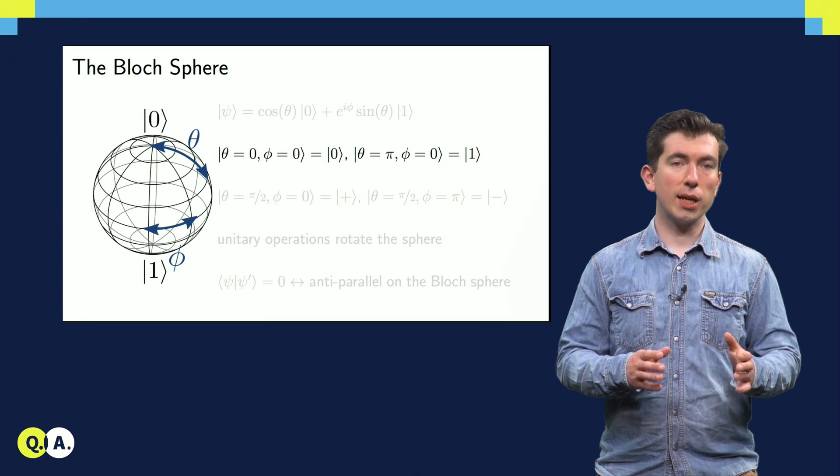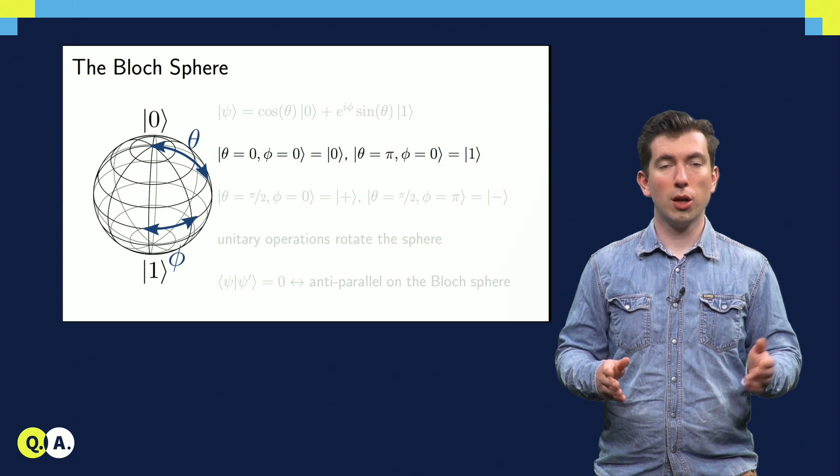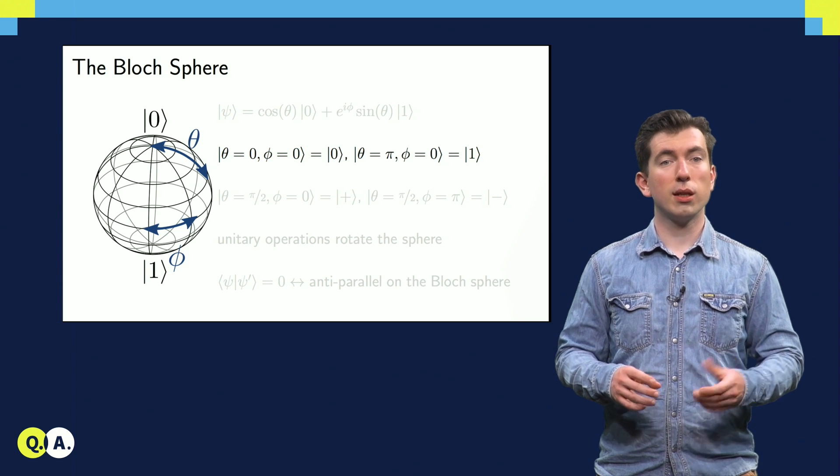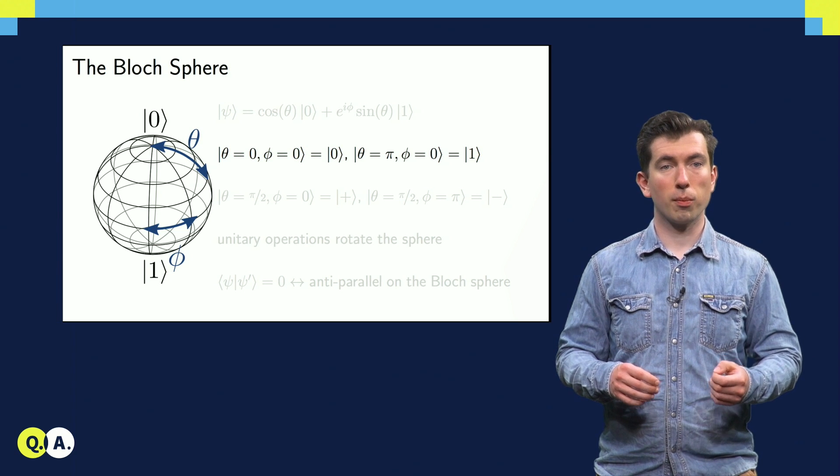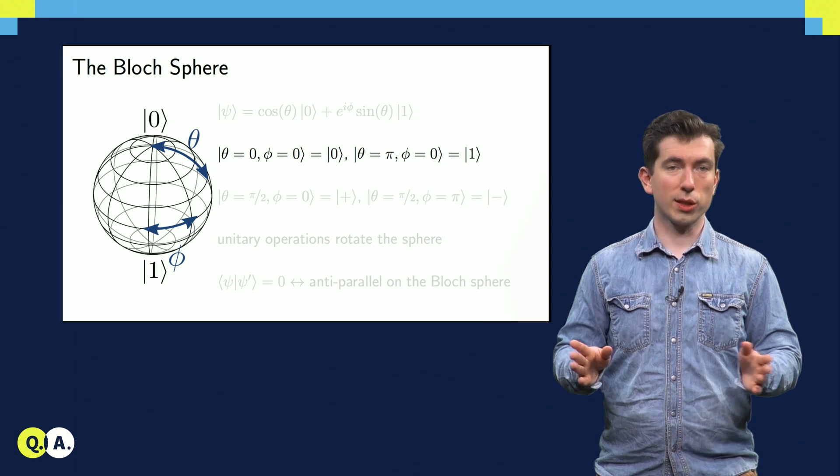We can see that, setting theta to 0 and phi to whatever we want, we get cos theta equals 1 and sin theta equals 0, so the corresponding state is simply the 0 basis state. If we set theta to pi, however, we get the 1 state, regardless of the setting of phi.